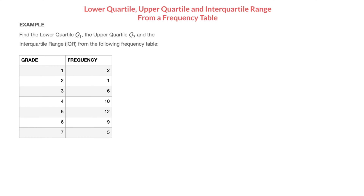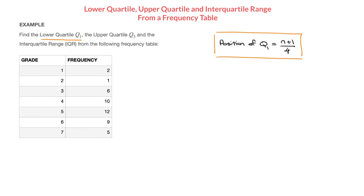The first thing we need to find is the lower quartile Q1, and for that there's a formula we'll need to use, which states that the position of the lower quartile Q1 is equal to (n + 1) / 4. Do make a note of that formula. This formula does not give us the value of the lower quartile directly — instead, it gives us its position.